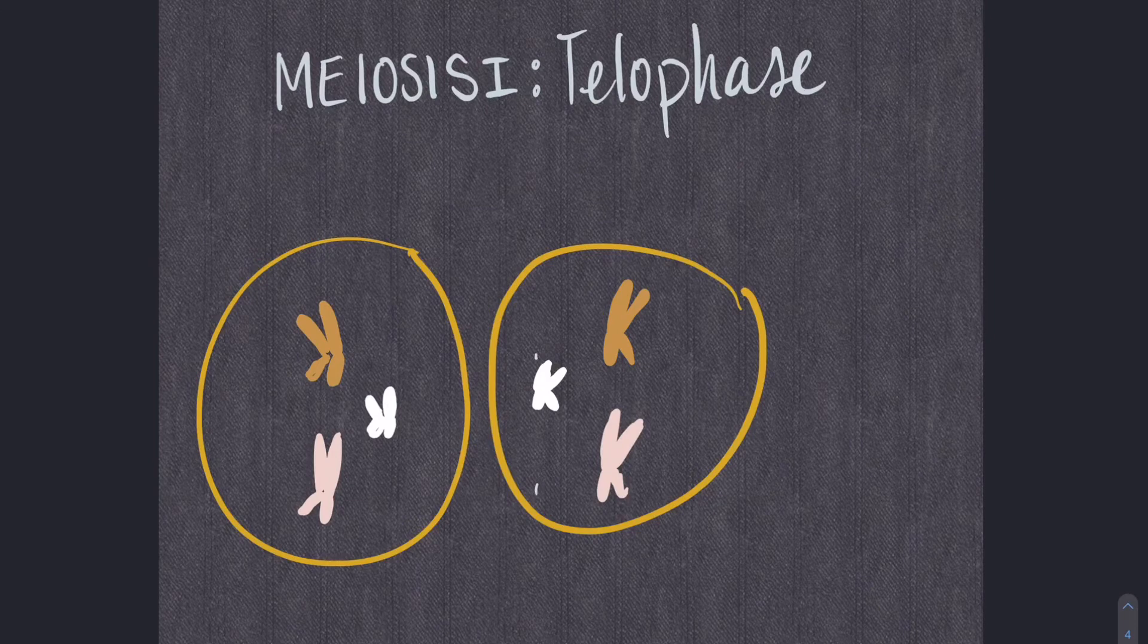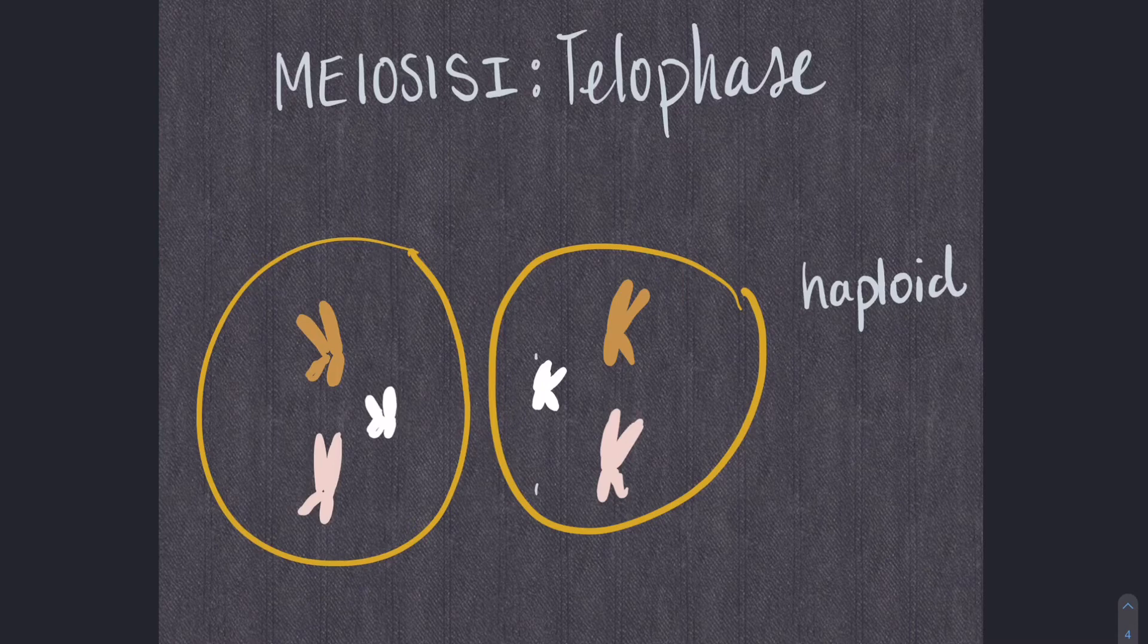Finally, telophase I. The cell actually divides in this stage. Now there are two cells that are haploid, each containing one set of chromosomes.